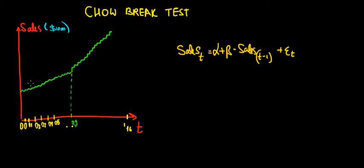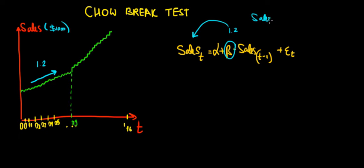If we look at the regression over here, we can notice that we have different slopes. In this part we can see a slight increase in sales across time — let's say for the sake of the example that would be 1.2. So the effect of sales in the previous period is 1.2 on sales in the current period, meaning that if sales in the previous period increase by $1,000, sales in the current period would increase by $1,200.